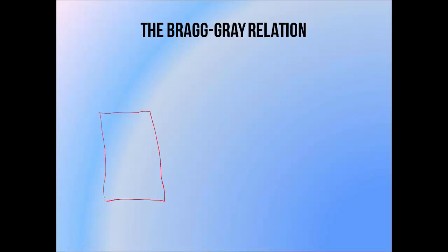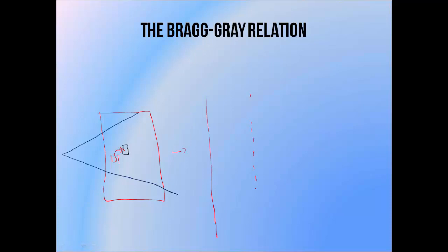We need the Bragg-Gray theory because if you want to measure dose at a point, all we can really do is put an ion chamber near it and measure the dose of the air volume. Dose is deposited mostly by secondary electrons at this point in homogeneous water without an ion chamber in place. The dose at this point, or depth, would be deposited by these secondary electrons here.